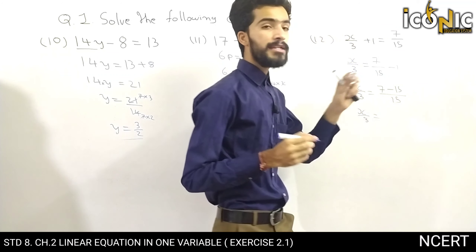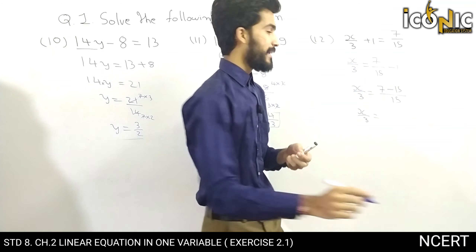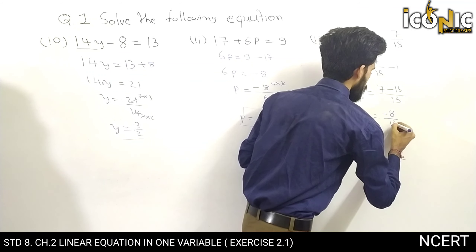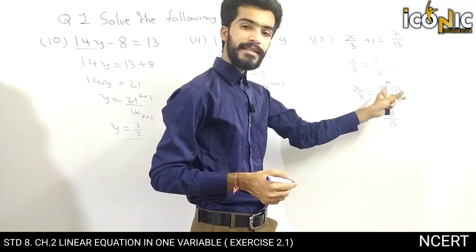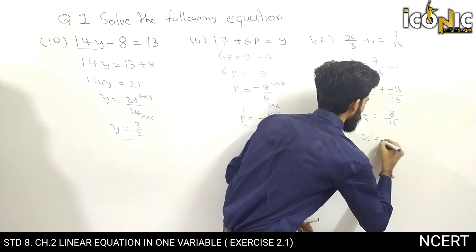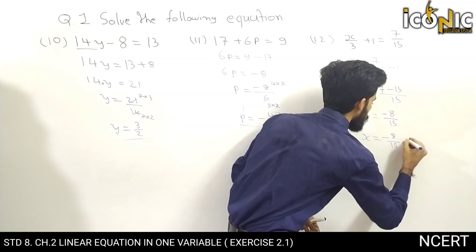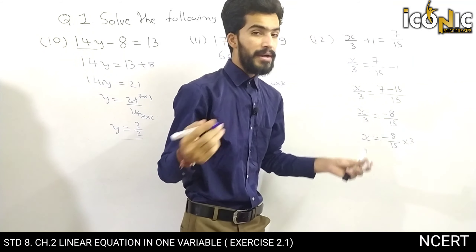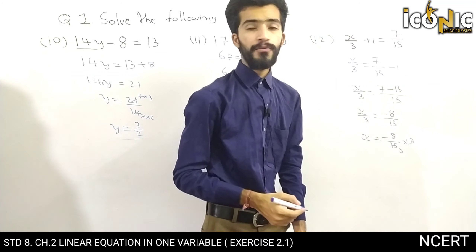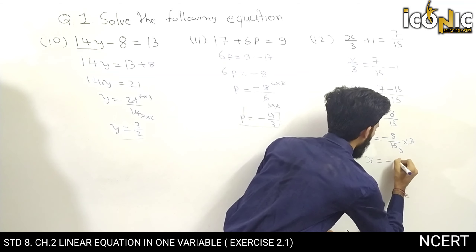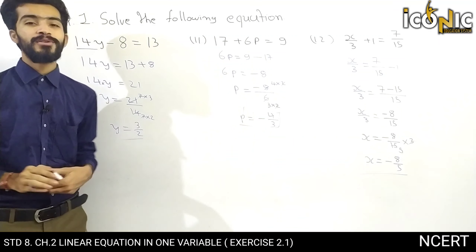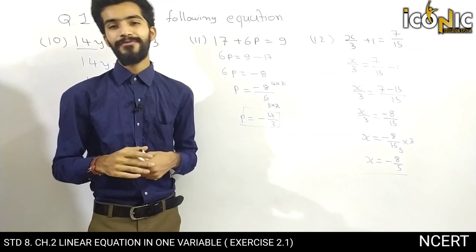7 minus 15 equals minus 8, so x by 3 is equal to minus 8 by 15. The 3 in division goes to multiplication on the right side: x is equal to minus 8 by 15 multiplied by 3. Since 3 and 15 cancel (3 fives are 15), x is equal to minus 8 by 5. This is our answer and the solution to question number 1.